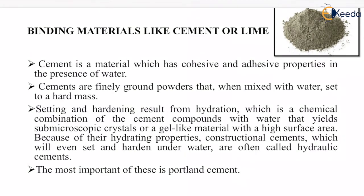The first constituent of concrete is cement or lime. Cement is a material which has cohesive and adhesive properties in the presence of water. Cement is a finely ground powder that, when mixed with water, sets to a hard mass. Setting and hardening result from hydration — a chemical combination of cement compounds with water that yields sub-microscopic crystals or a gel-like material with a high surface area. Because of their hydrating properties, constructional cements that set and harden even under water are called hydraulic cements, the most important of which is Portland cement.